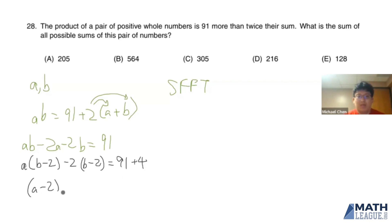We factor out the left-hand side now, we get A minus 2 times B minus 2, is equal to 95.